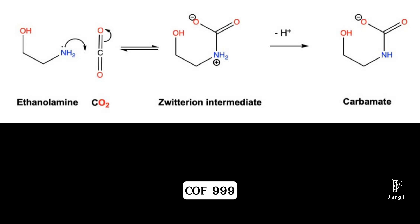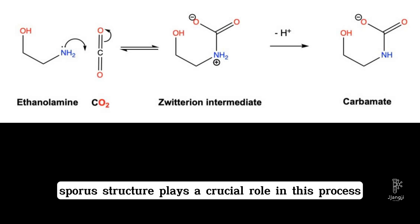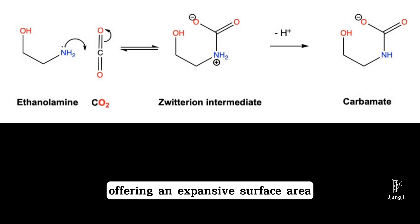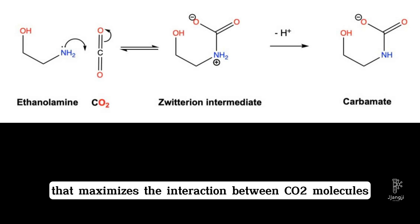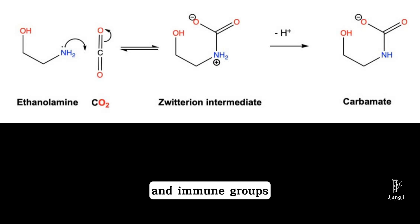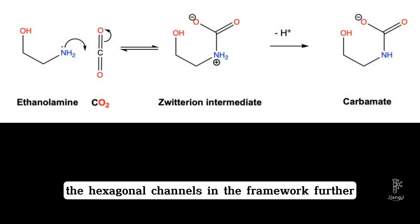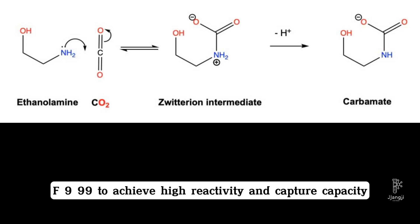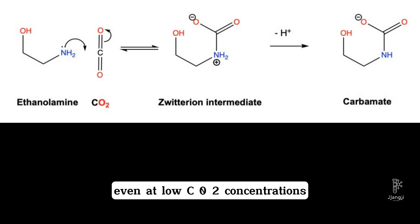COF-999's porous structure plays a crucial role in this process, offering an expansive surface area that maximizes the interaction between CO2 molecules and amine groups. The hexagonal channels in the framework further enhance this efficiency, allowing COF-999 to achieve high reactivity and capture capacity, even at low CO2 concentrations.